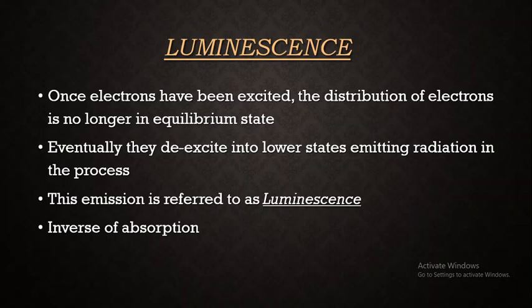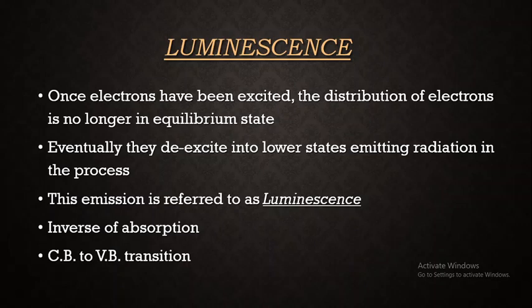Absorption is always explained in the upward direction, but luminescence occurs in the downward direction — it is observed when there is a transition from the conduction band to the valence band. When there is a transition from the valence band to the conduction band, it is absorption. When the transition is from the conduction band to the valence band, we observe luminescence. This is the main difference between absorption and luminescence.